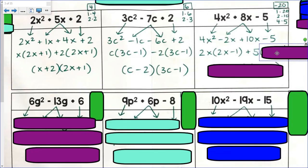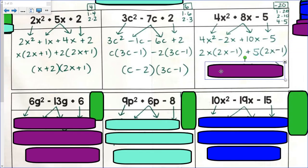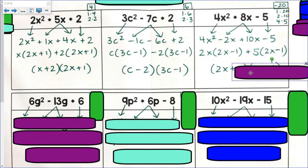And GCF of 10x minus 5 is 5. And then I'm left with 2x minus 1. And I have my final form. 2x plus 5, 2x minus 1.